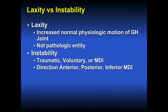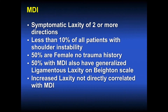We also consider the direction of instability — whether it is anterior, posterior, inferior, or multidirectional. Some are traumatic, some atraumatic, as in multidirectional instability in the female athlete. MDI is defined as symptomatic laxity of two or more directions, as defined by NEAR. Less than 10% of all patients with shoulder instability have MDI. 50% are female with no history of trauma, and 50% of patients with MDI also have general ligamentous laxity on the Beighton scale. Increased laxity is not directly correlated with multidirectional instability.